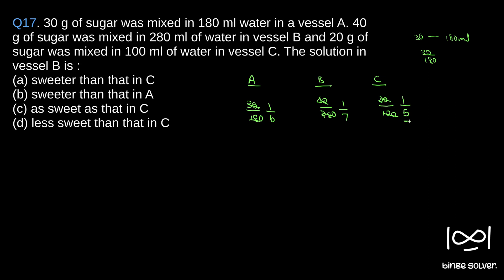sweeter than B, so A is wrong. Option B says sweeter than in A. When you compare B with A, 6 is smaller so 1 by 6 is greater, so it is not sweeter than in A—it is less sweet than in A. So B is also not the correct answer.